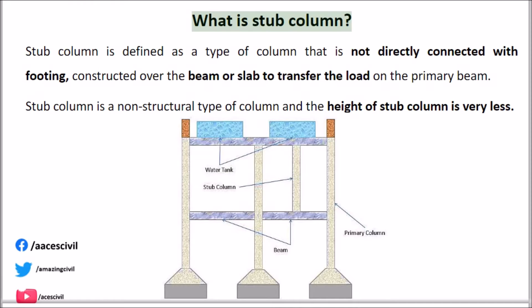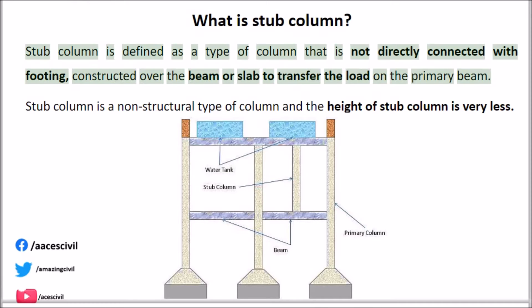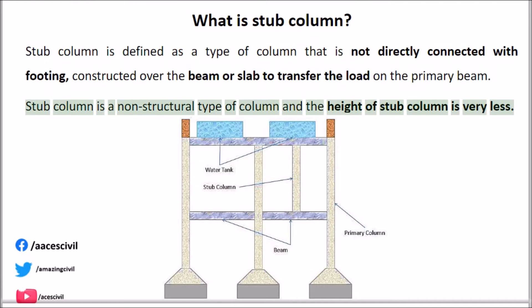What is stub column? Stub column is defined as a type of column that is not directly connected with footing, constructed over the beam or slab to transfer the load on the primary beam. Stub column is a non-structural type of column and the height of stub column is very less.